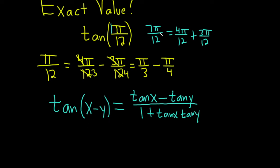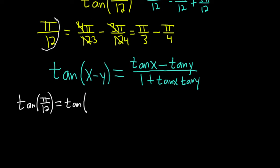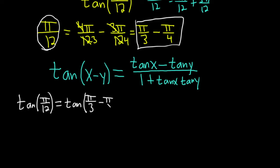Let's apply this formula to our problem. The tangent of pi over 12 equals the tangent of pi over 3 minus pi over 4. Here x is pi over 3 and y is pi over 4. You can write that down to make it a little bit easier to check your work.